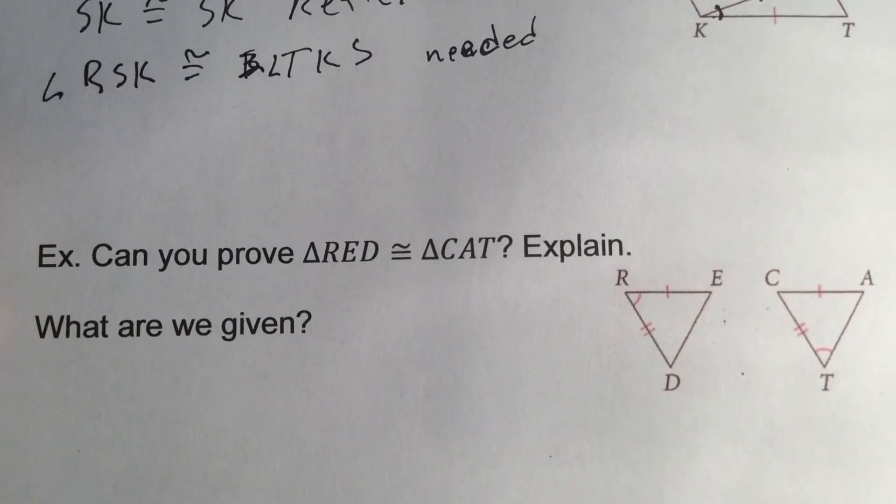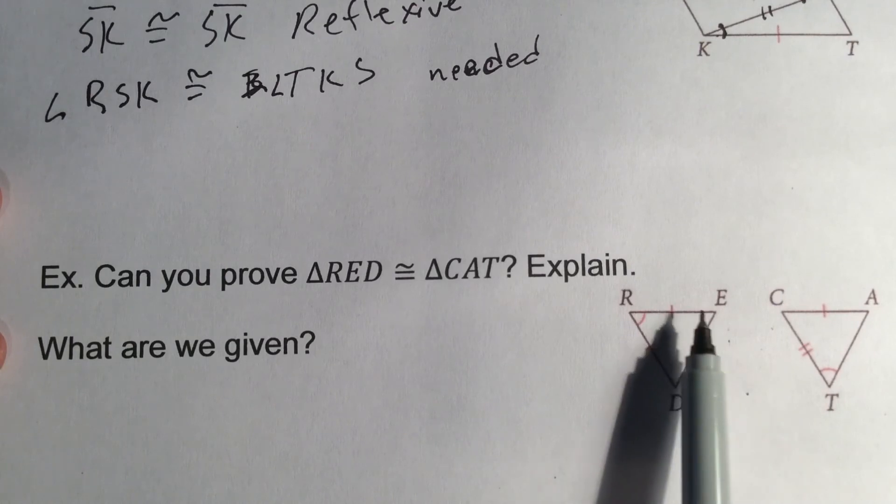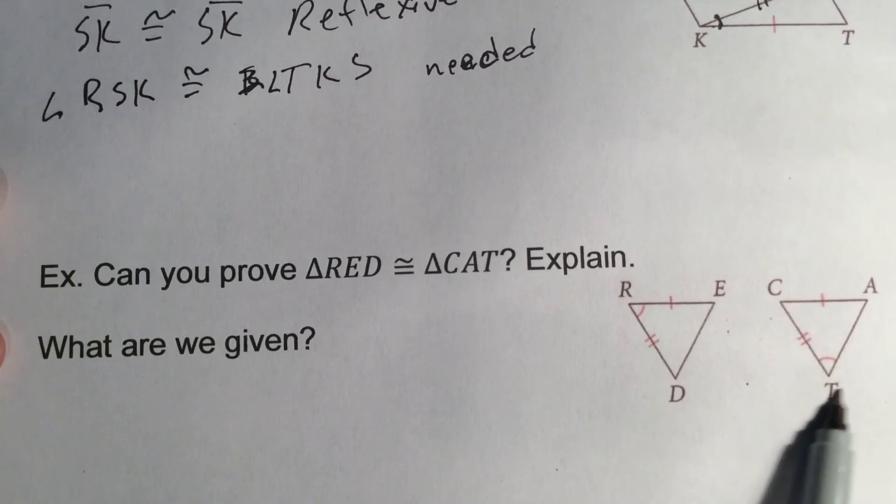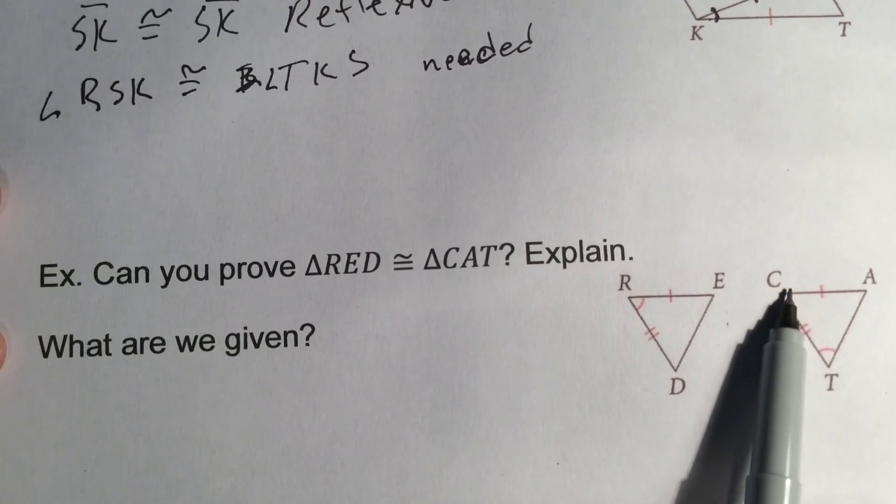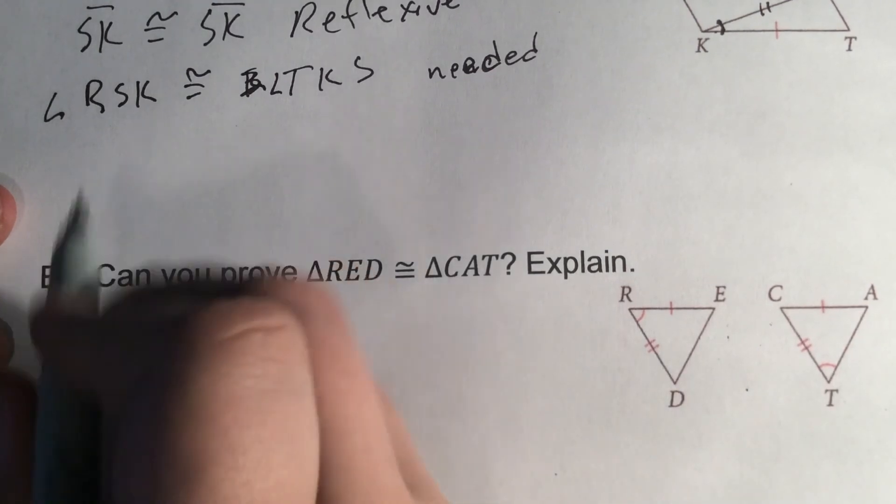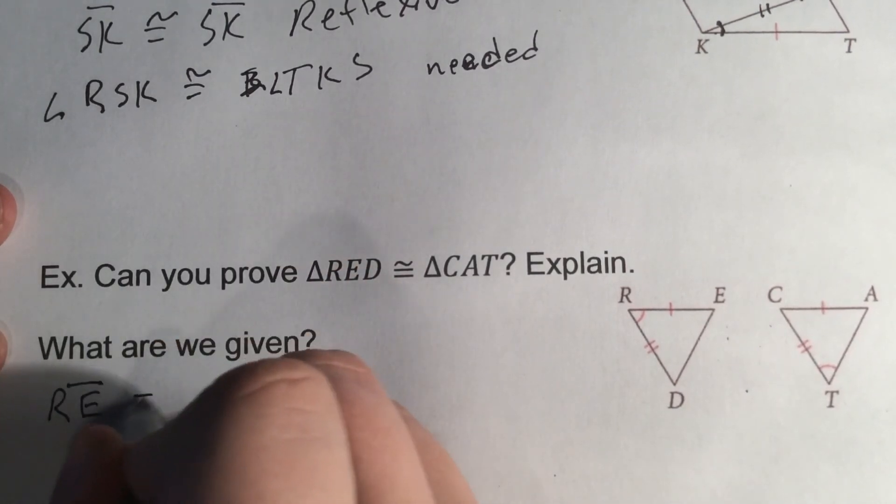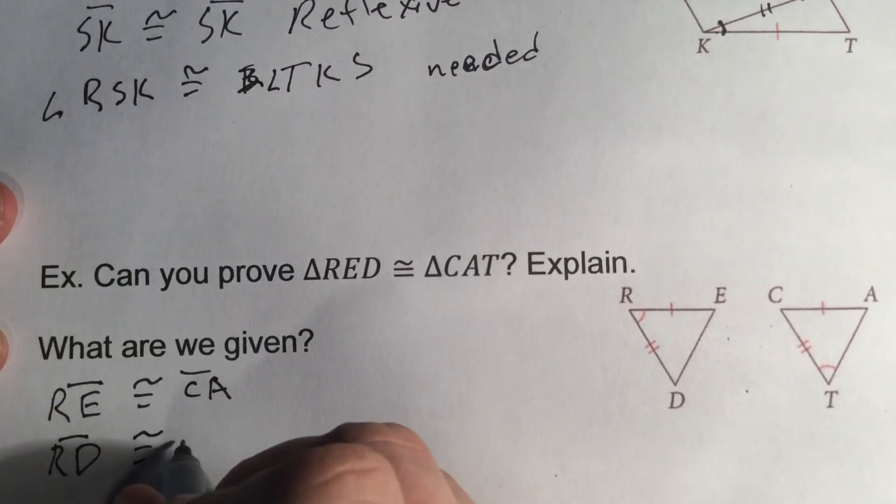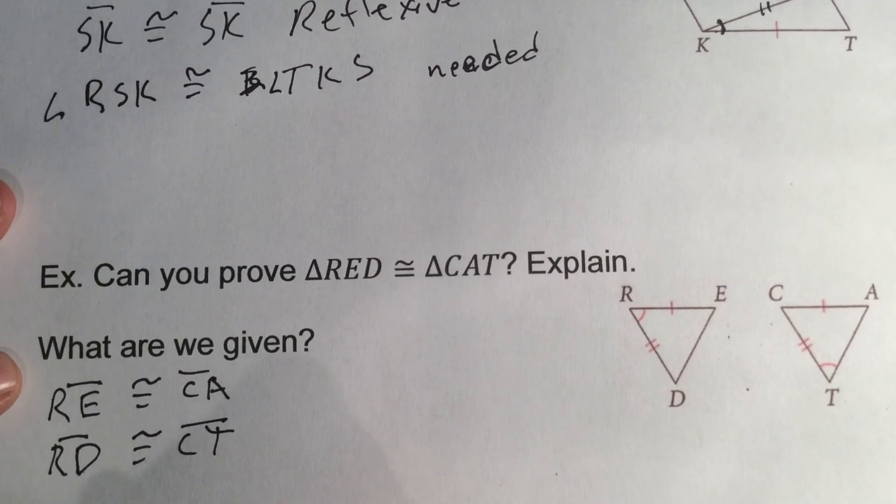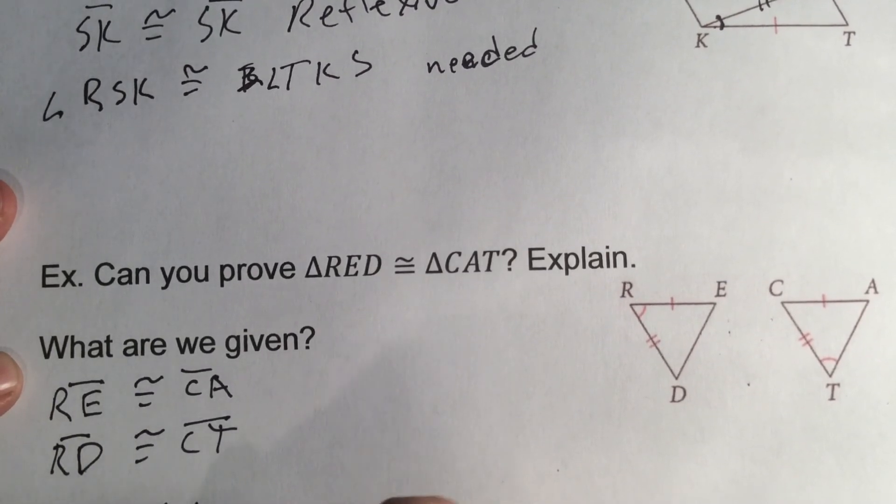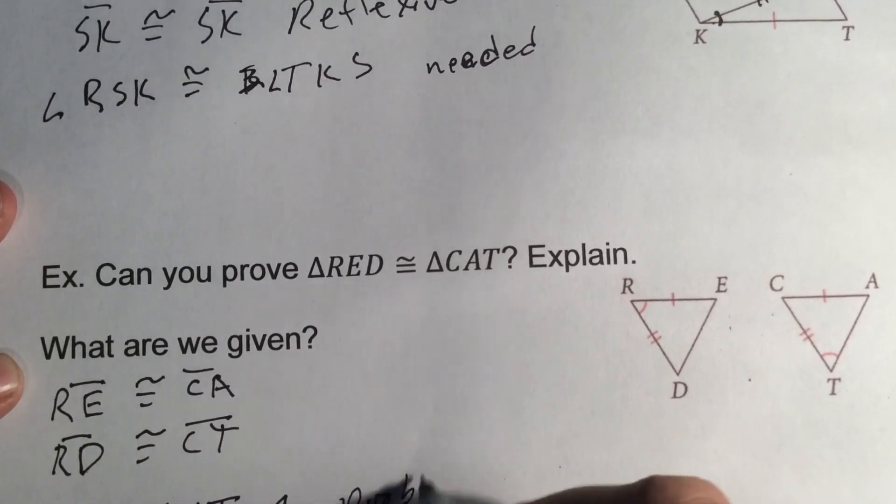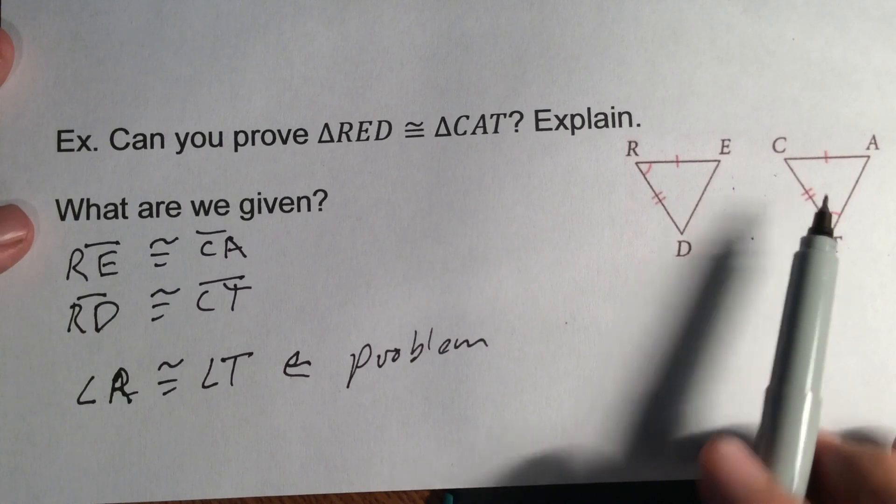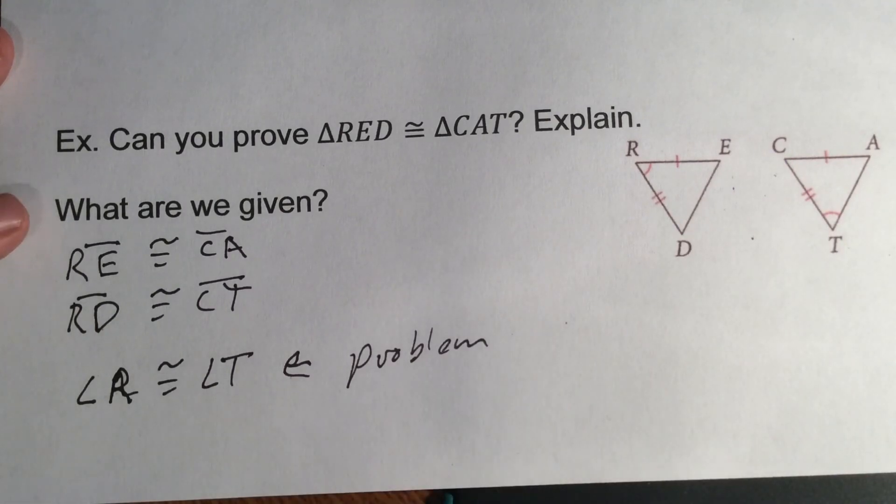Could we prove these two are congruent? If we look, we have one set of sides, two sets of sides, and we have a set of angles. However, this angle is not in between. It has to be the in-between angle. So C would have to be congruent with R to make this work. We're given RE is congruent to CA, RD is congruent to CT, and angle R is congruent to angle T, and that's the problem. R would need to be to C in order to use side-angle-side. We have T instead. So this does not work. We cannot do it by side-angle-side.